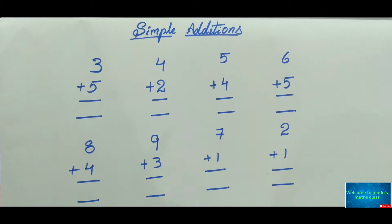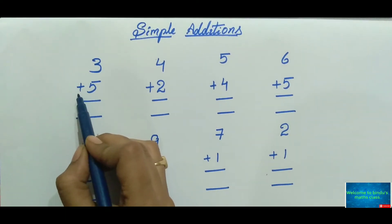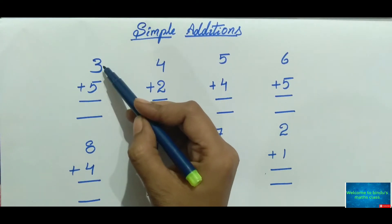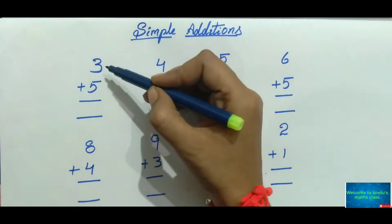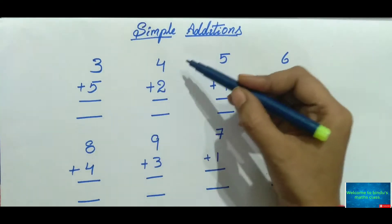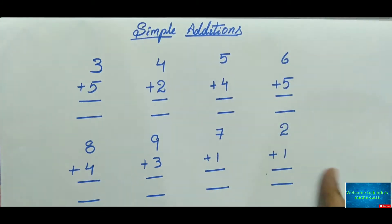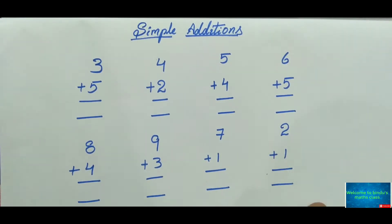The first stage of addition is simple addition of single digits. The symbol you can see here is the plus sign — that is the symbol for addition. The two numbers being added are called addends. The first number is called the first addend and the second number is called the second addend. So three is the first addend, five is the second addend. Similarly, four is the first addend and two is the second addend.